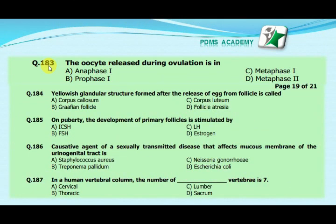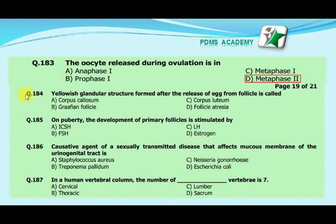Our next MCQ is: the oocyte released during ovulation is in — option A: anaphase one, option B: prophase one, option C: metaphase one, option D: metaphase two. Our correct answer is D, metaphase two.